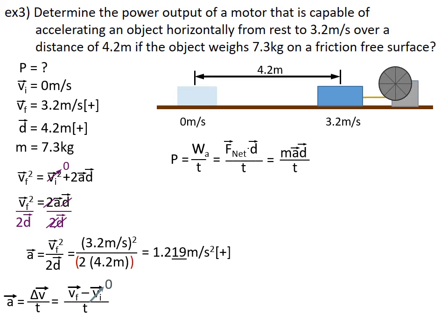So in the numerator, I only have VF and on the bottom I have time. So acceleration in this case equals final velocity divided by time. I want to get time by itself. So the first thing I will do is get it out of the denominator by multiplying both sides by time.